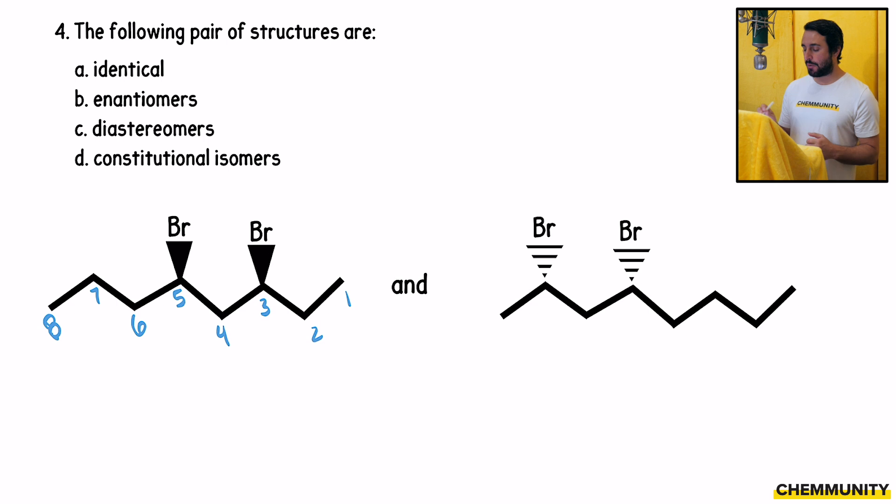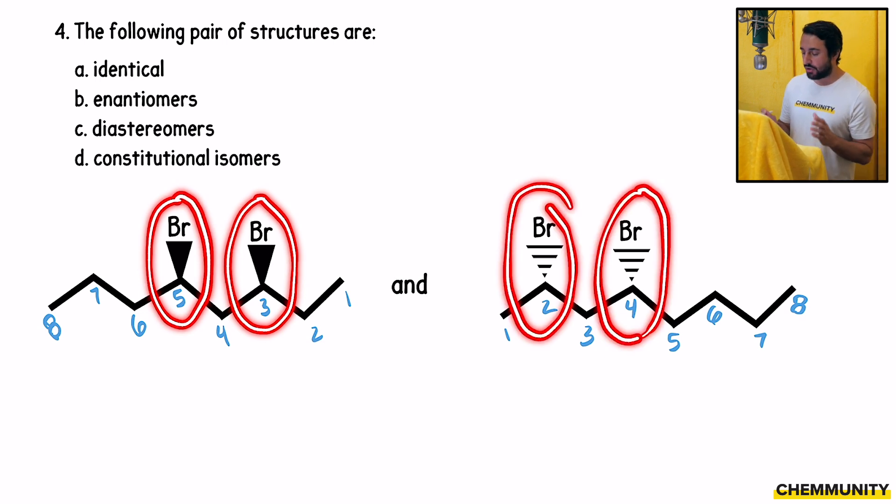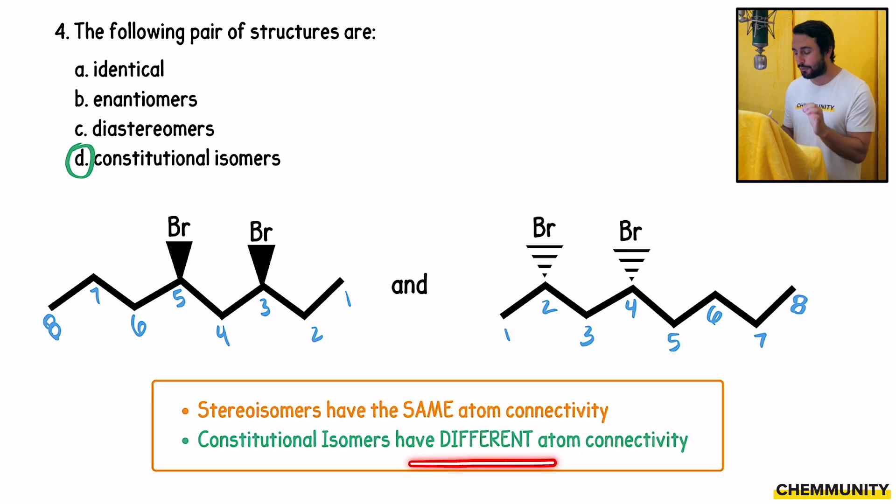And then on the right, this one we would number from left to right, because that will give the bromine occurring soonest. 1, 2, 3, 4, 5, 6, 7, 8. So where are the bromo groups? Over here, they're on carbons 3 and 5. And then on the other structure, they're on carbons 2 and 4. So these are actually completely different molecules. These are not stereoisomers. These are constitutional isomers. They have different connectivity.